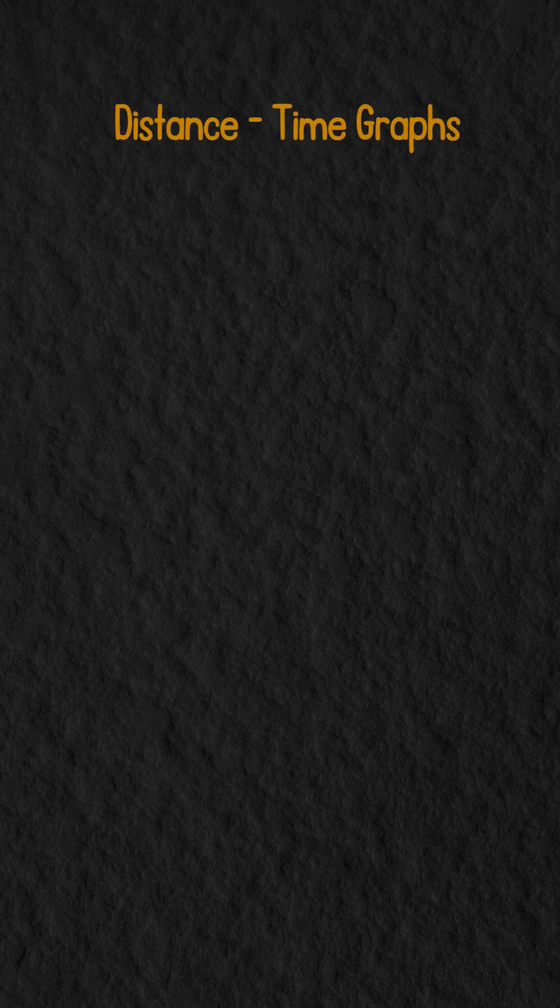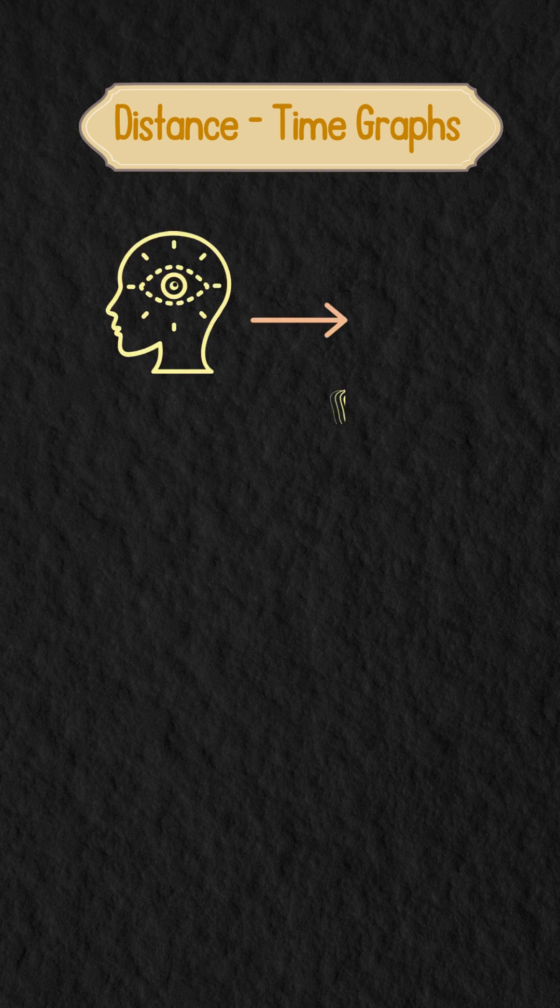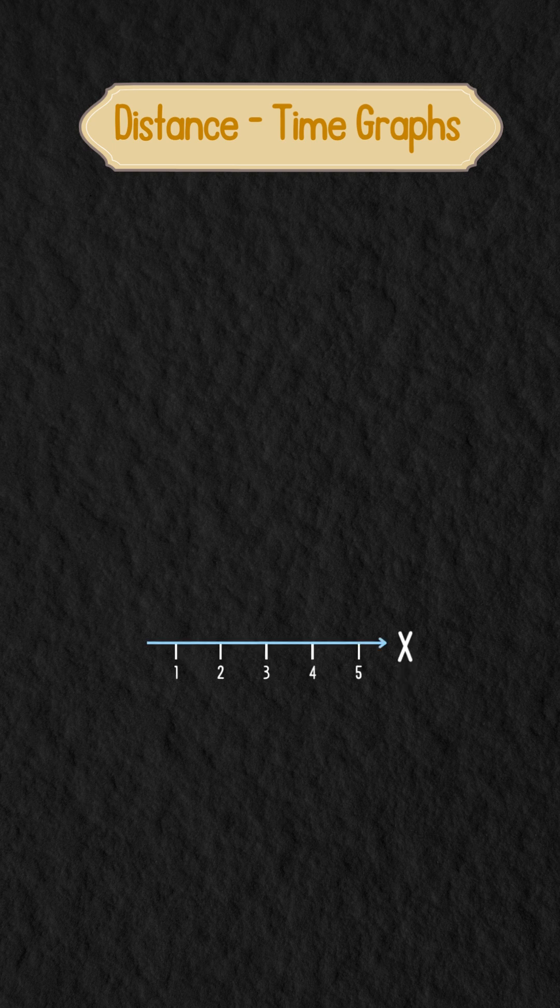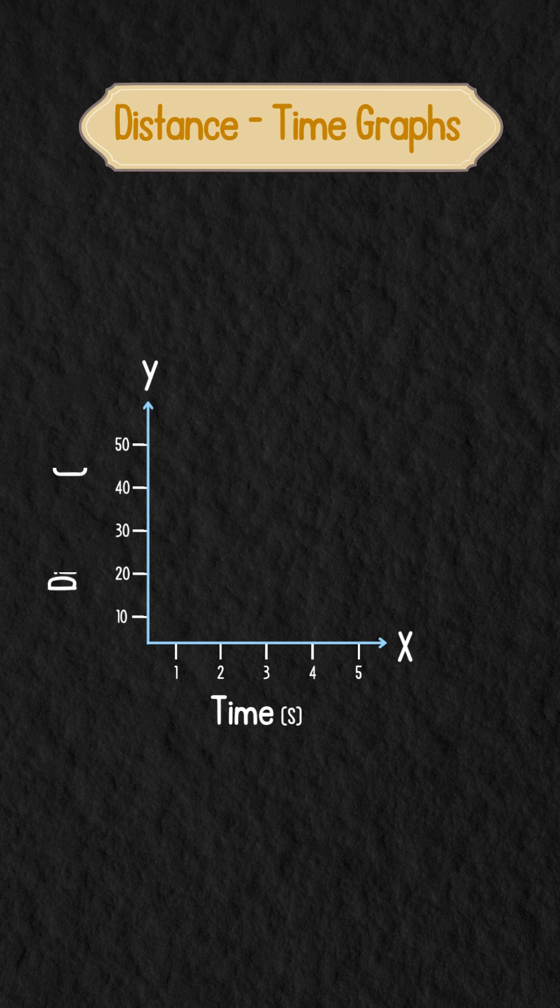Hey everyone! Today, let's break down distance-time graphs and how they help visualize motion. On the graph, the horizontal axis represents time, and the vertical axis shows distance.